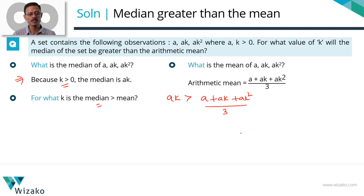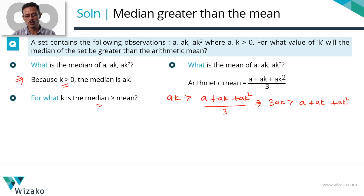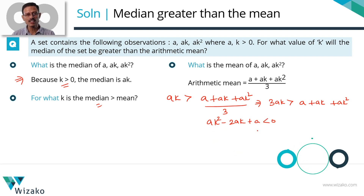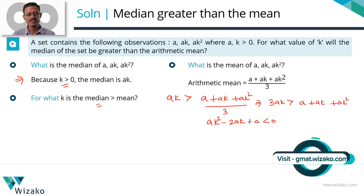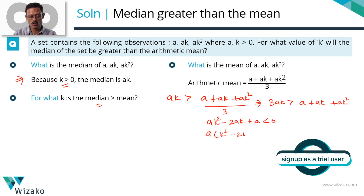Step 1: cross multiply by 3. So 3AK should be greater than A + AK + AK². Let's take all terms to one side — 3AK becomes minus 2AK, so the entire expression is less than 0. In the next step we have: AK² − 2AK + A < 0. All terms on the left-hand side have an A in them, so let's take A as a common factor: A(K² − 2K + 1) < 0.